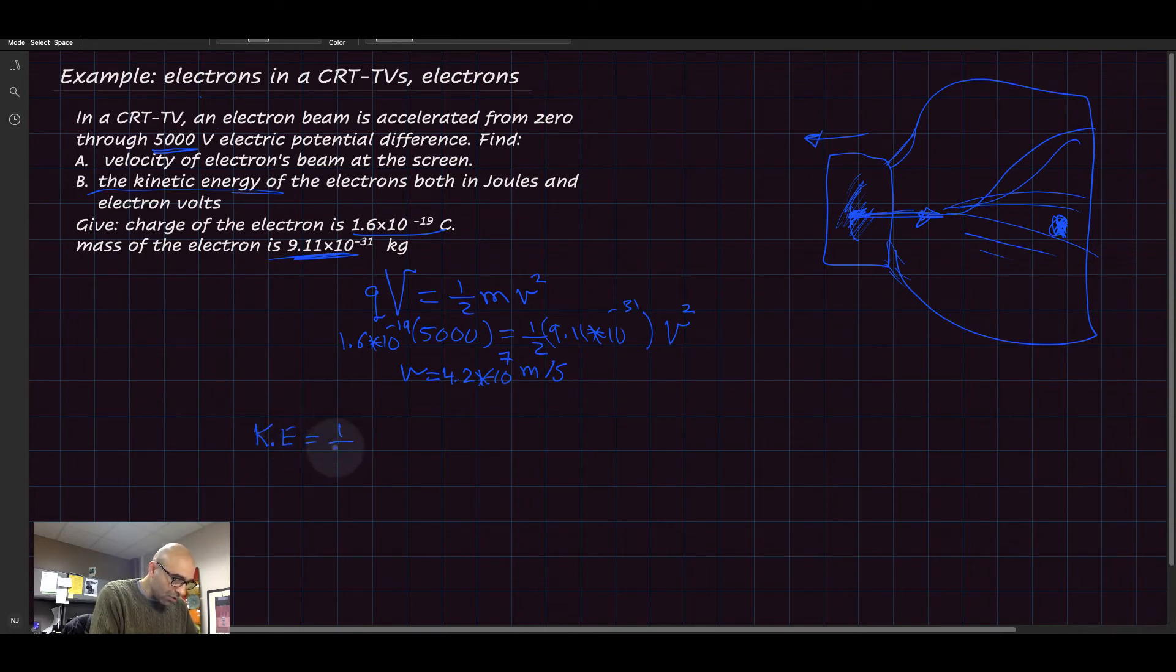Kinetic energy equals one half m times v squared. That would be one half times 9.11 times 10 to the minus 31 for the mass of the electron, times the velocity which we found, 4.2 times 10 to the power 7 meters per second, squared.